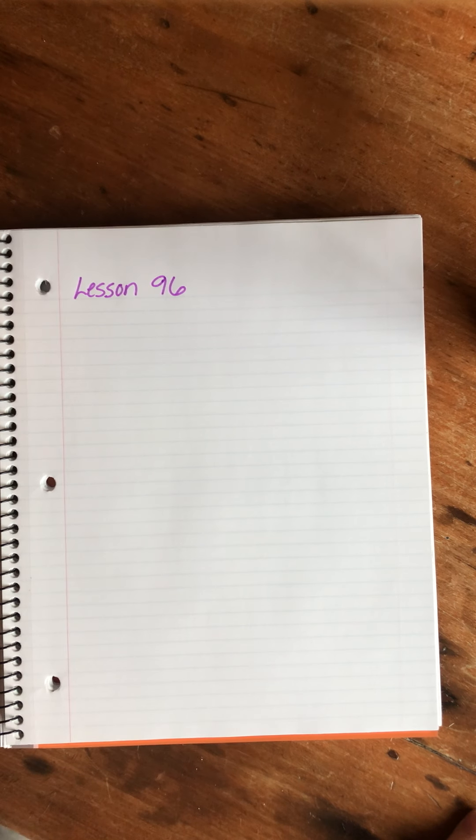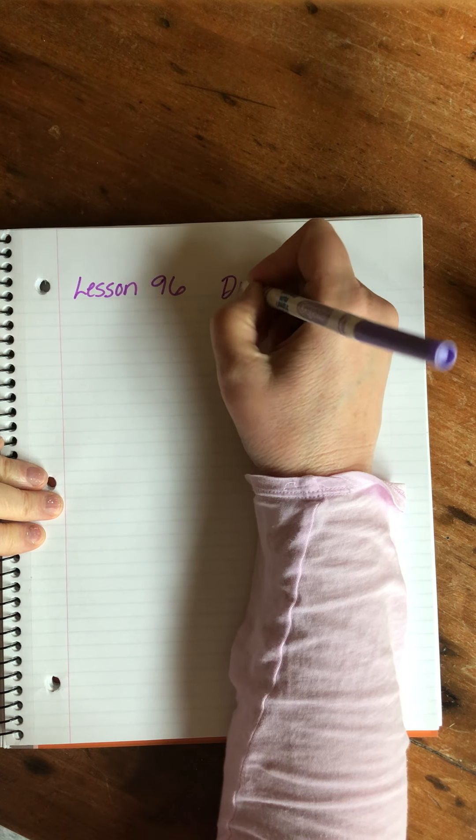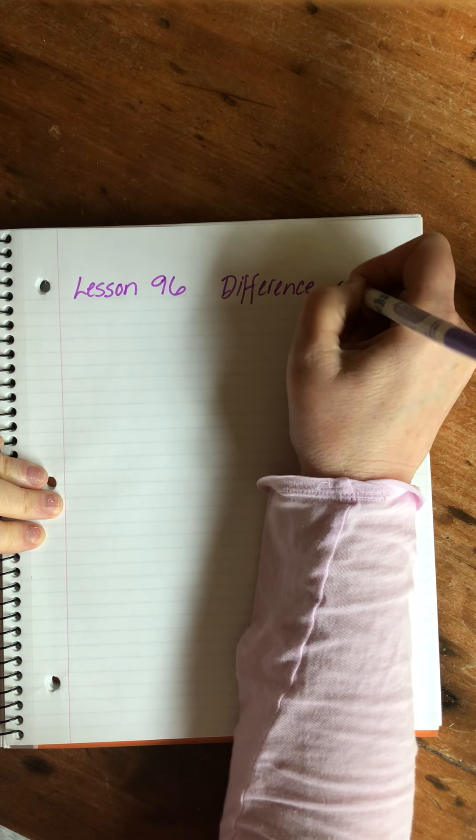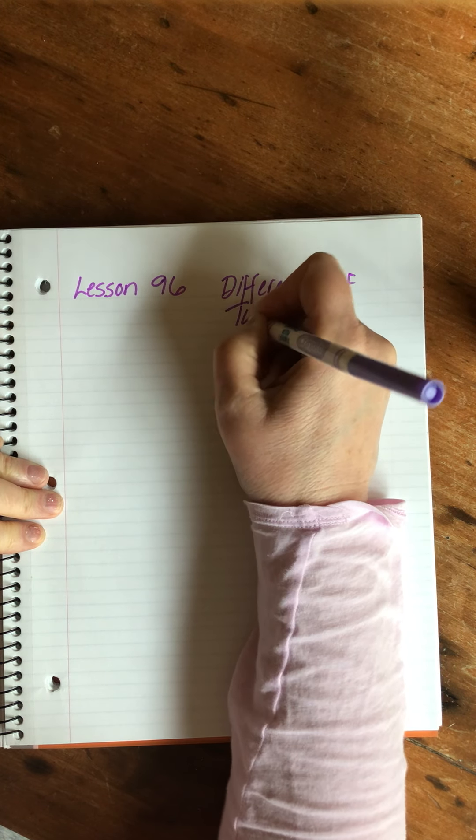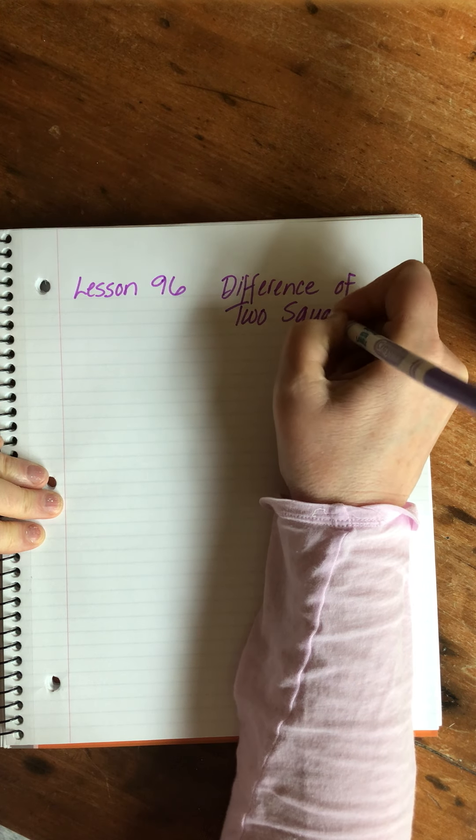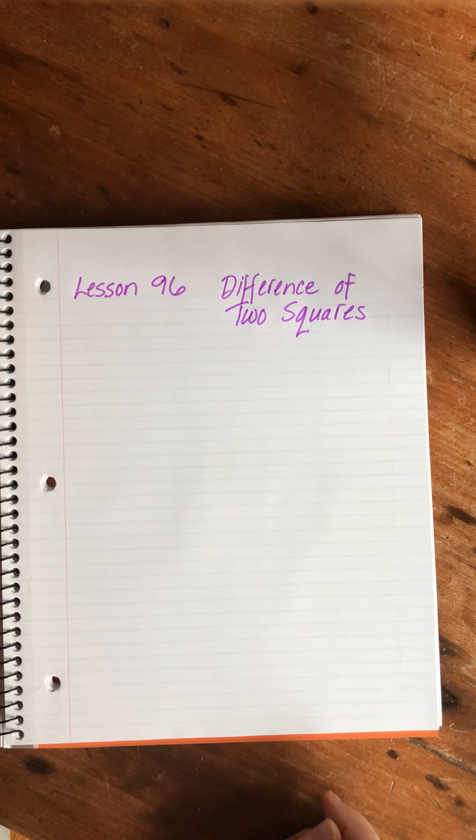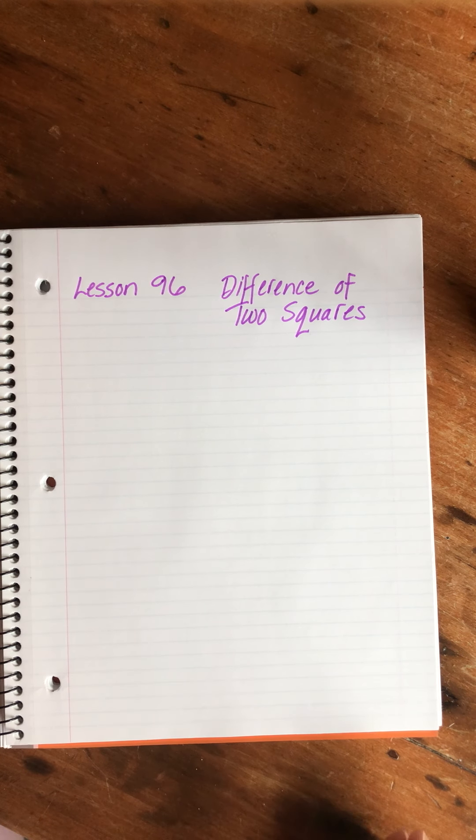Welcome to Saxon Algebra 1 Lesson 96. Difference of two squares is our topic. This lesson is not difficult, it's quite simple. There's a little bit of a fussy distinction we're going to make at the beginning, so bear with me through that part, but then when we get to the actual calculations you'll be like okay this isn't hard.